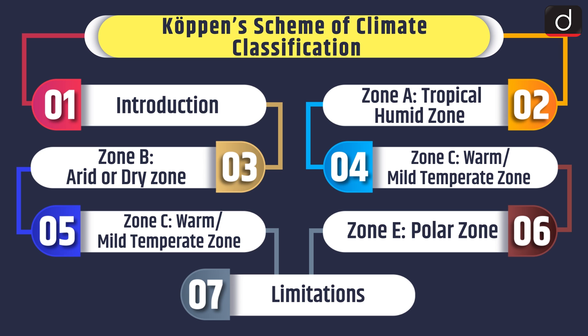Then we will discuss about Zone A, Tropical Humid Zone; Zone B, Arid or Dry Zone; Zone C, Warm or Mild Temperate Zone; Zone D, Continental Zone; Zone E, Polar Zone; and lastly, we will discuss about the limitations.